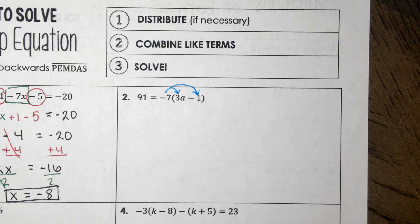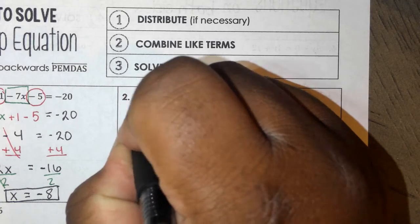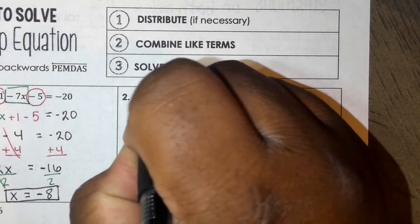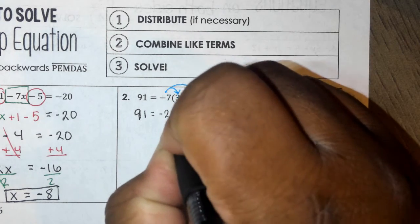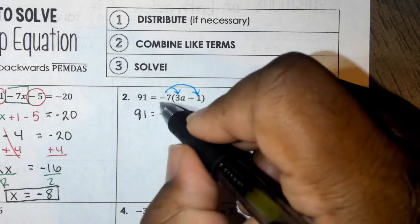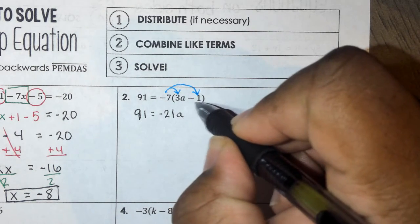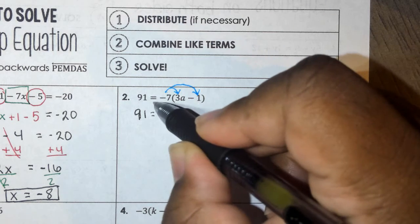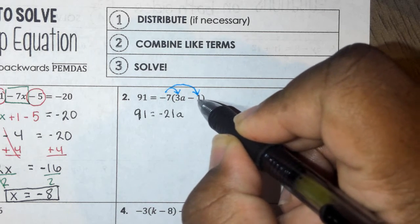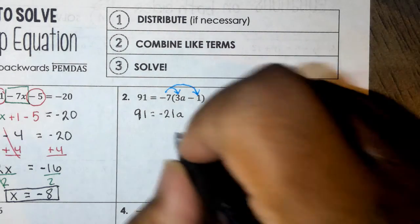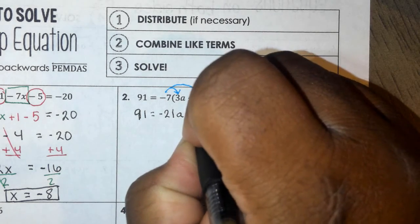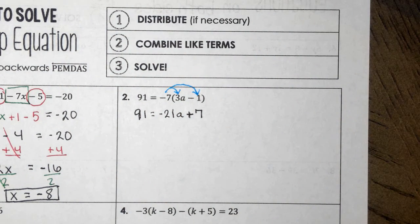When I distribute, I need to rewrite my equation. I have 91 = (-7)(3a), which is -21a, and then (-7)(-1). This is a mistake some kids make all the time — I have a negative seven outside and this term has a minus sign in front of it, making it negative. So negative seven times negative one gives me positive seven. My equation after distribution is 91 = -21a + 7.